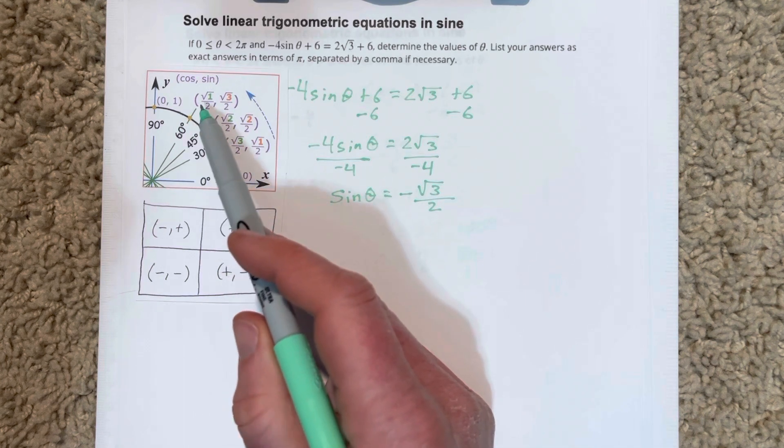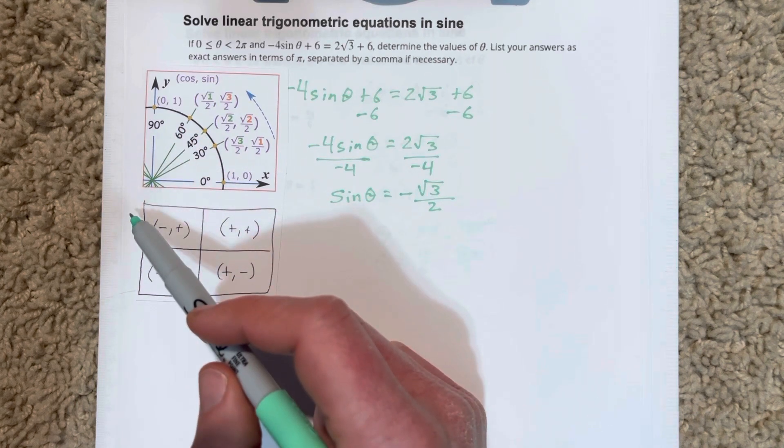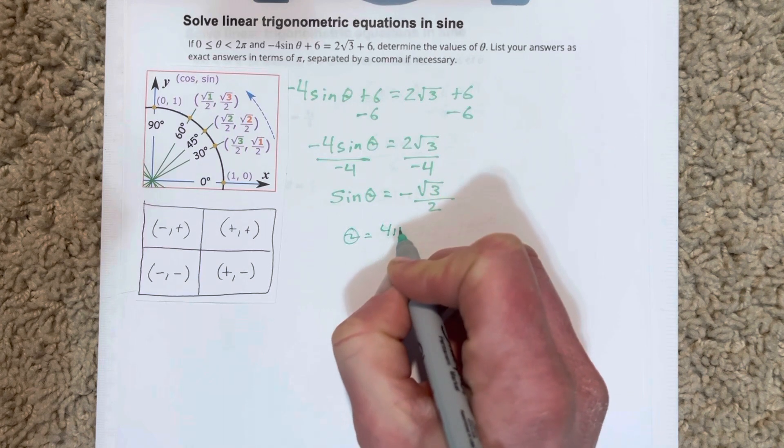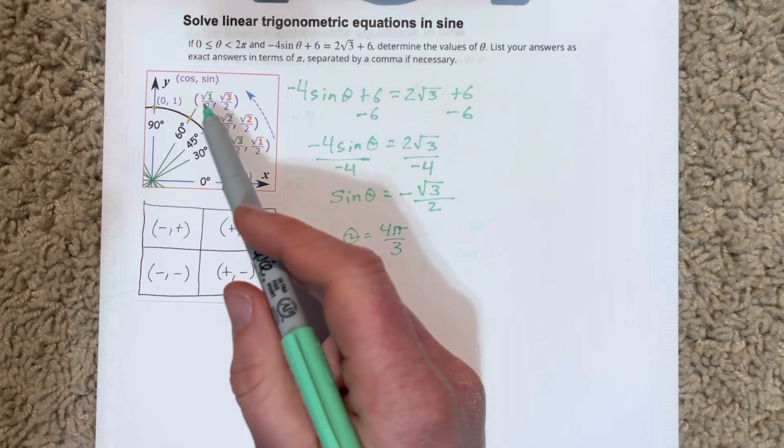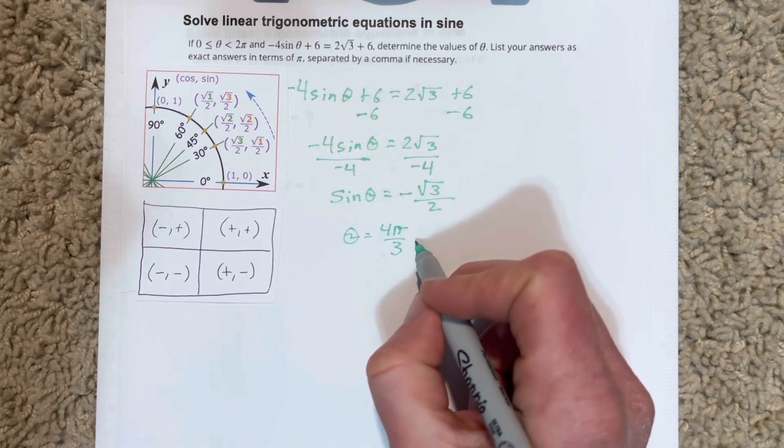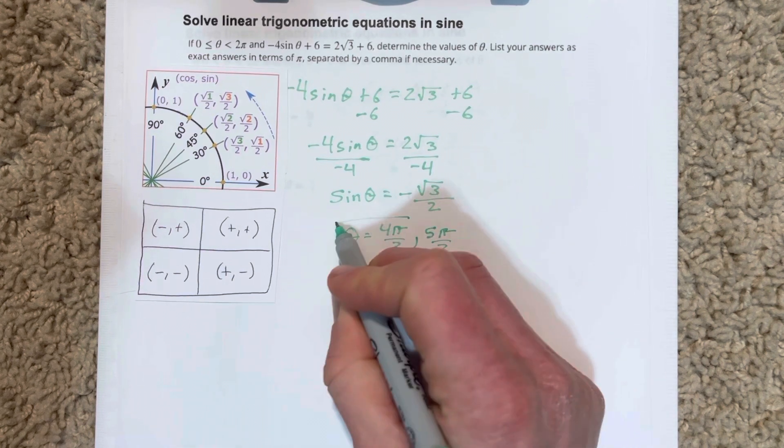This is really π/3. So our radians in quadrant 3 would be 4π/3, so θ would be 4π/3. And radians for our 60 degree mark in the fourth quadrant would be 5π/3. So our solutions are going to be 4π/3 and 5π/3 for θ.